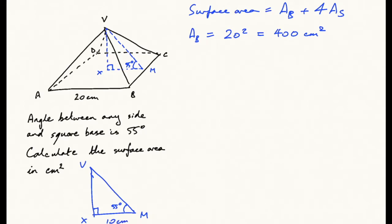We need to find this length here, the hypotenuse. We've got an adjacent angle, so we're going to use cosine. So it's going to be cos 55 degrees equals adjacent 10 over the hypotenuse VM.